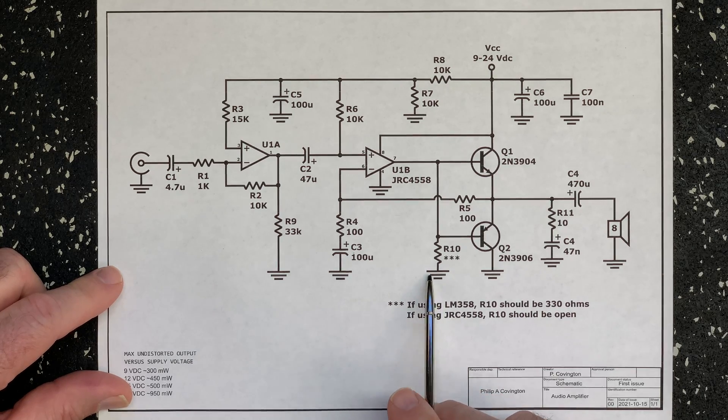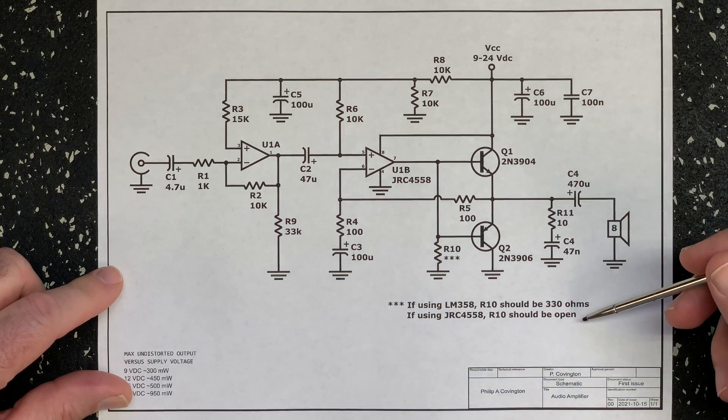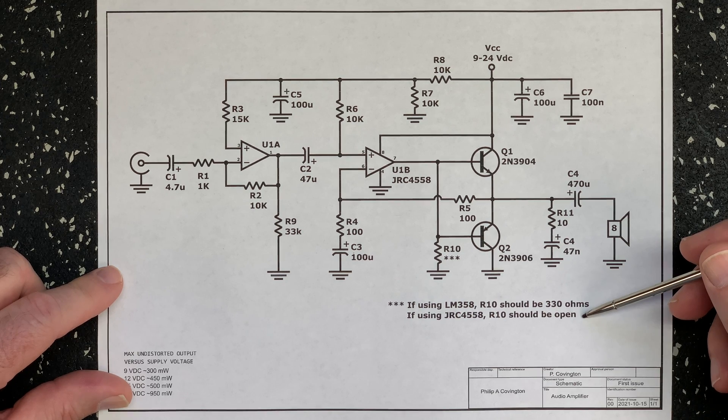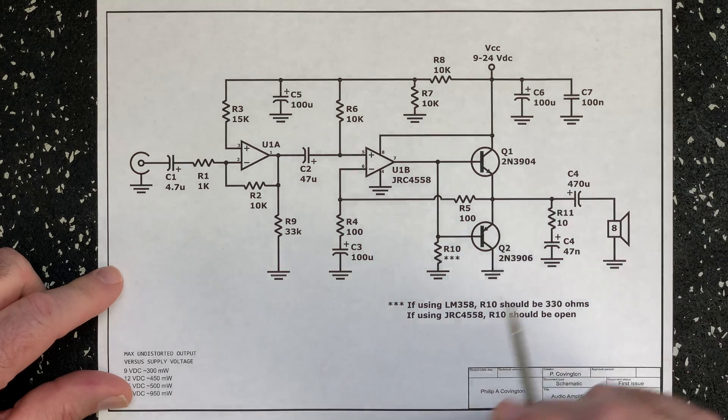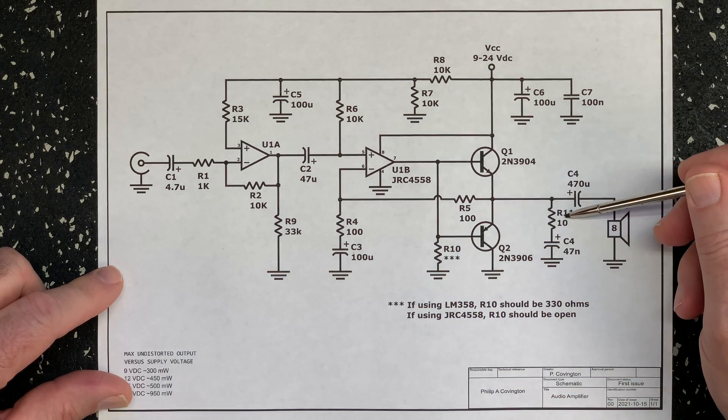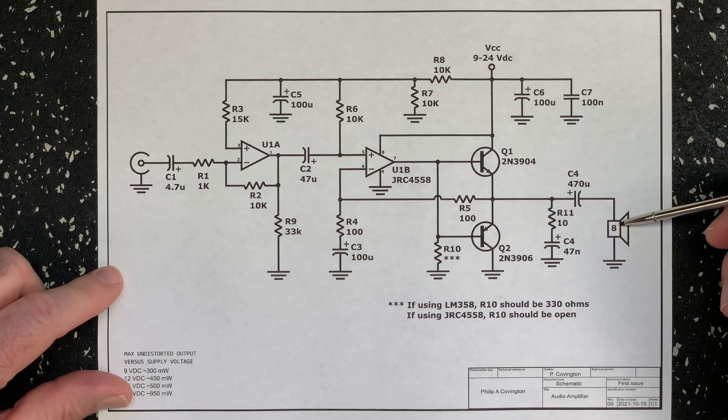For other op amps, you may or may not need a different value for R10, including not populating R10 in the case of the 4558 op amp. R11 and C4 on the output counteract the inductive reactance of the 8 ohm speaker load.